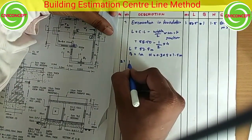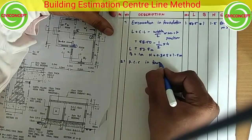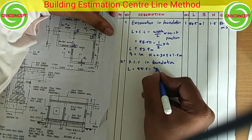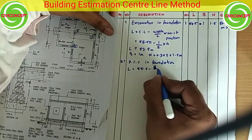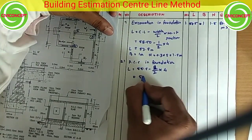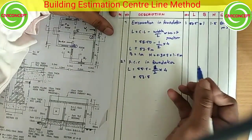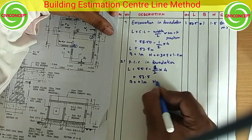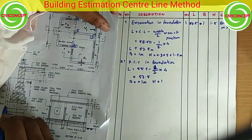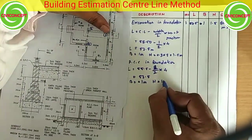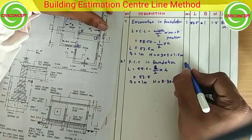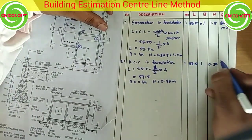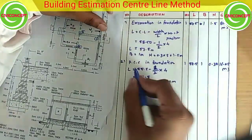Now we find out the second quantity: PCC work in foundation. Center line is 55.5, minus (1 ÷ 2) × 4 = 53.5 meters. Width is 1 meter and height of PCC is 0.3 meters. Quantity of PCC = 53.5 × 1 × 0.3 = 16.05 cubic meters.